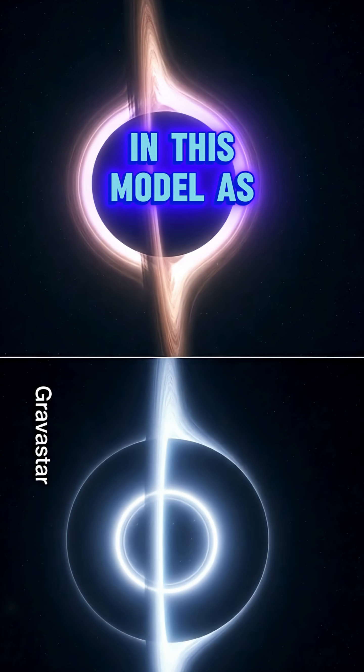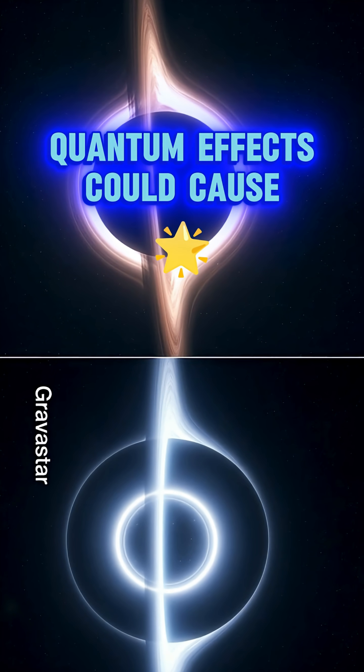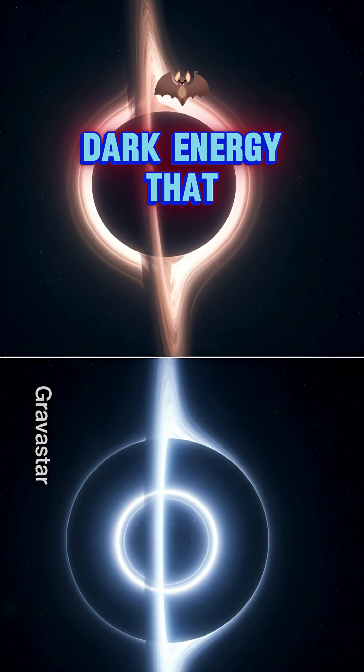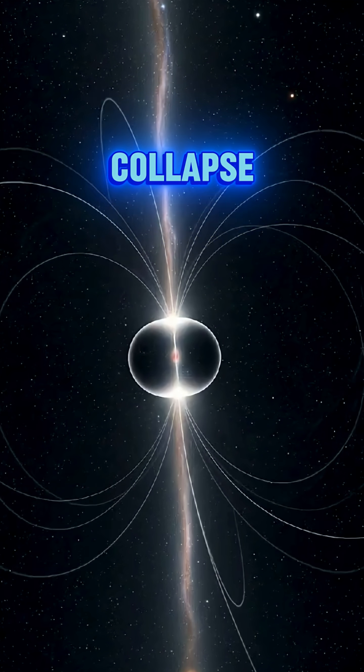In this model, as the star contracts, quantum effects could cause a phase change in spacetime. This creates a bubble of repulsive dark energy that counteracts further collapse.